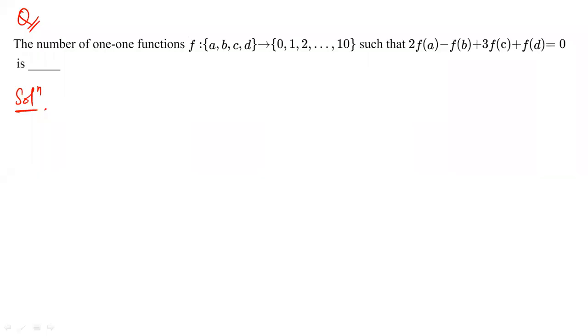The question asks for the number of one-to-one functions f from {a, b, c, d} to {0, 1, 2, ..., 10} such that 2f(a) - f(b) + 3f(c) + f(d) = 0.